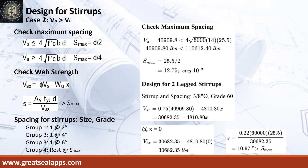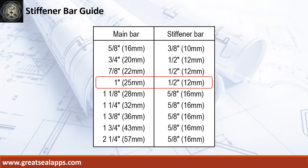The stirrup spacing is as follows: one at 2 inches, one at 4 inches, one at 6 inches, rest at 10 inches. For 1 inch diameter main bars, use half inch diameter stiffener bars.